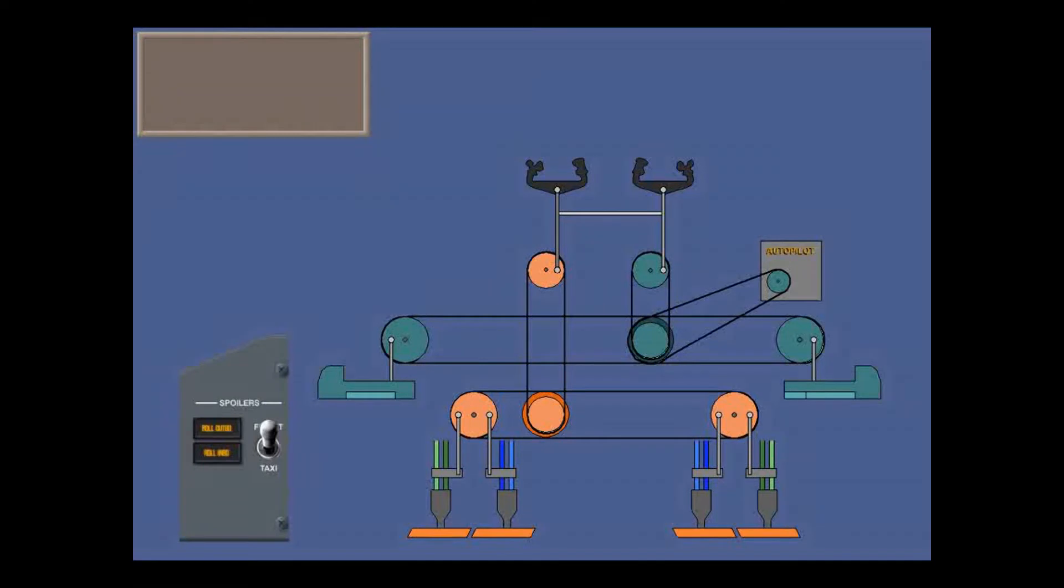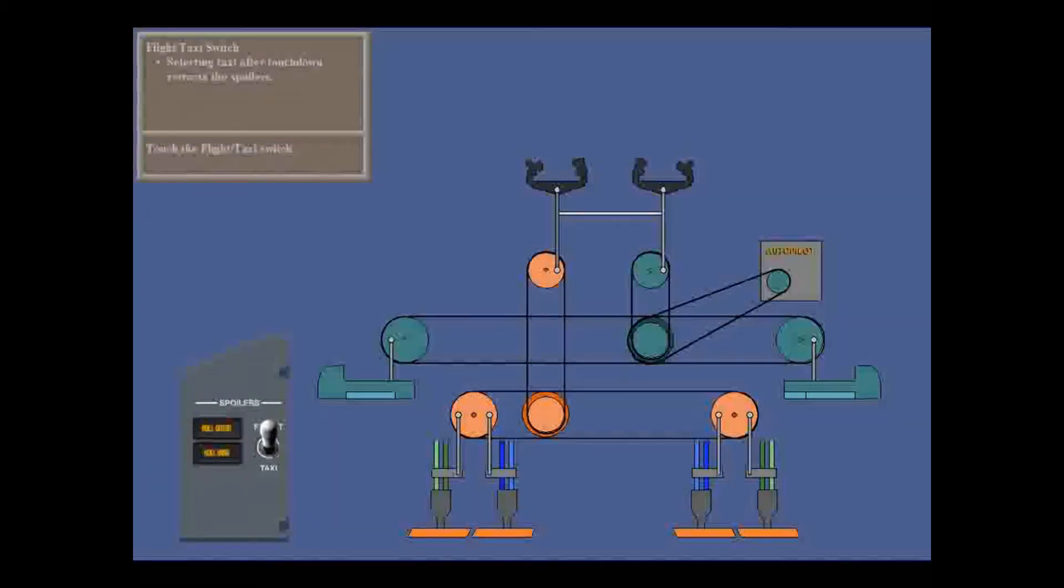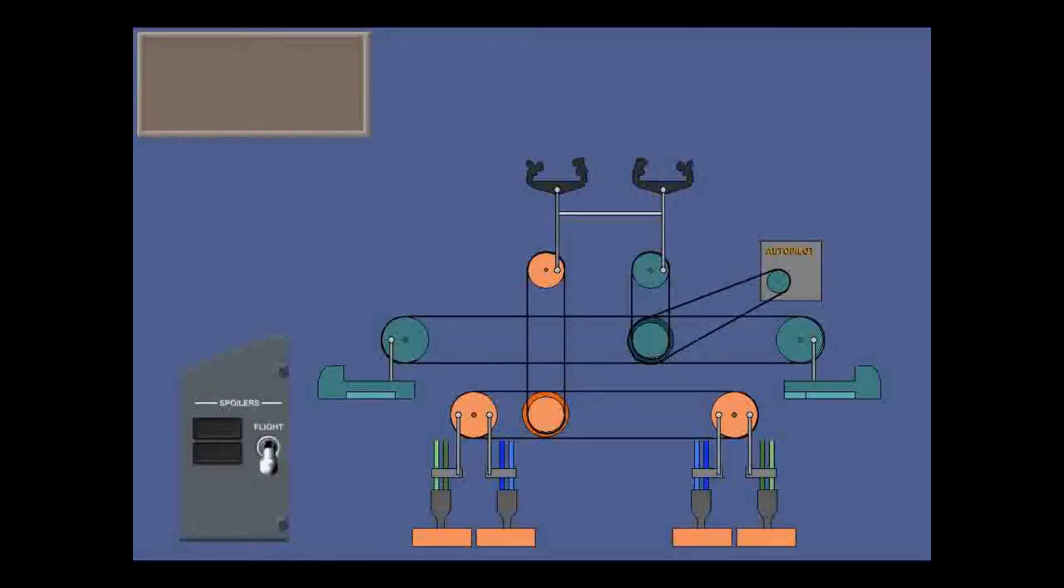After touchdown, the spoiler panels can be retracted by selecting the flight taxi switch to taxi. Touch the flight taxi switch to select taxi. The flight taxi switch is spring-loaded to flight and held in taxi by a solenoid.